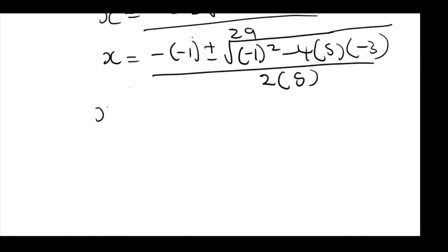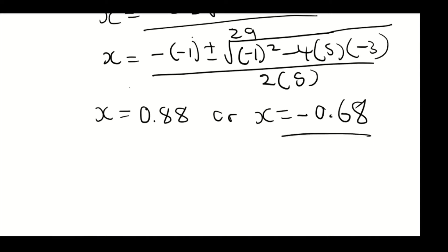Our solutions of x, written to two decimal places, are x equals 0.88 or x equals minus 0.68. These are your solutions of x.